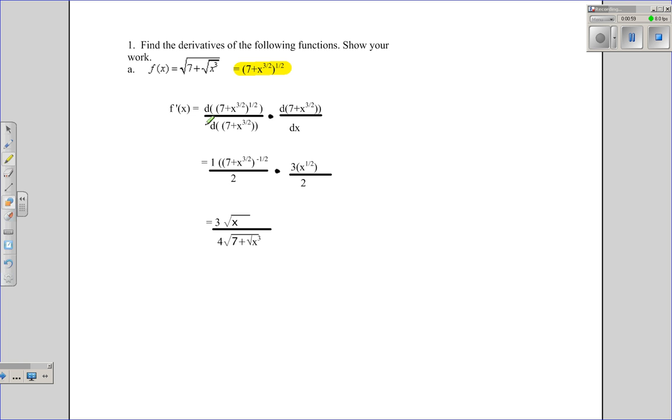The chain rule suggests that you take the derivative of the big function first, and that's represented here in this little step. Then you multiply the derivative of that inside function with respect to x. This derivative is taken by bringing the 1 half down, so 1 half is the power, and that inside function is then raised to the negative 1 half power. That's just a straight power rule application.